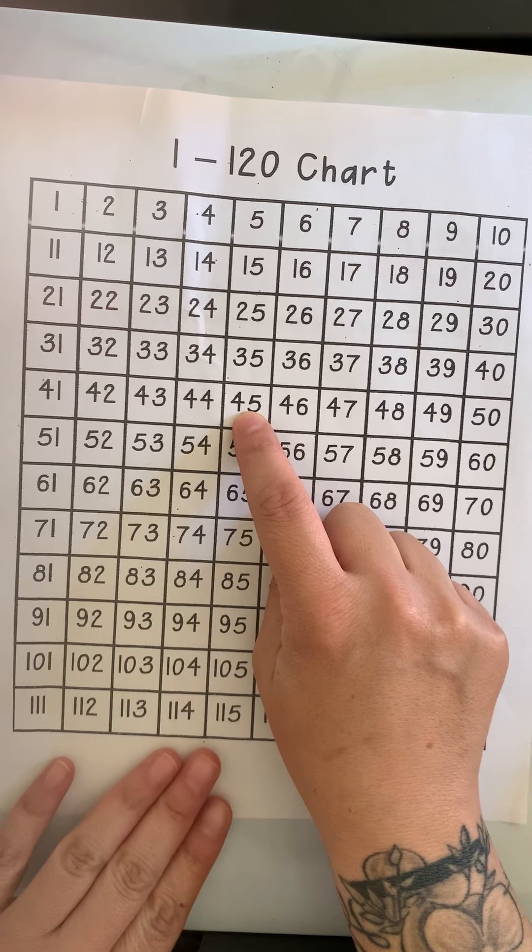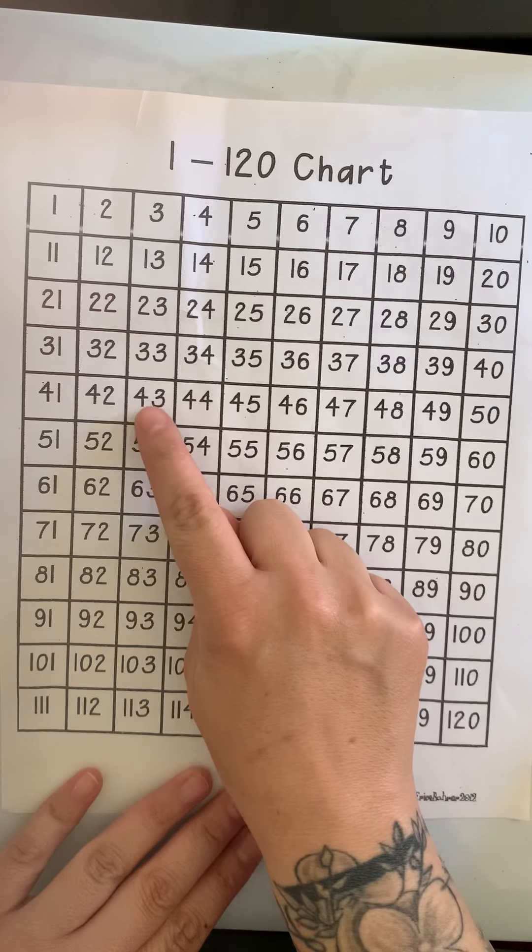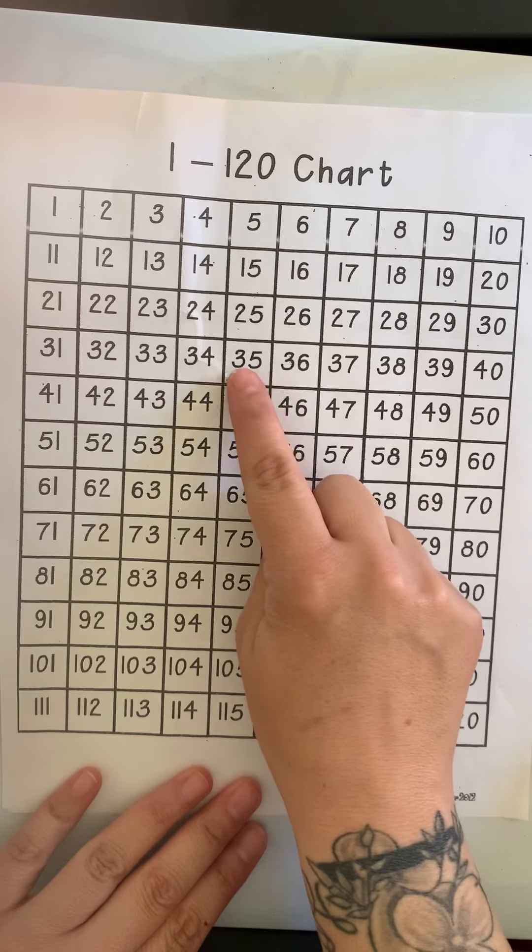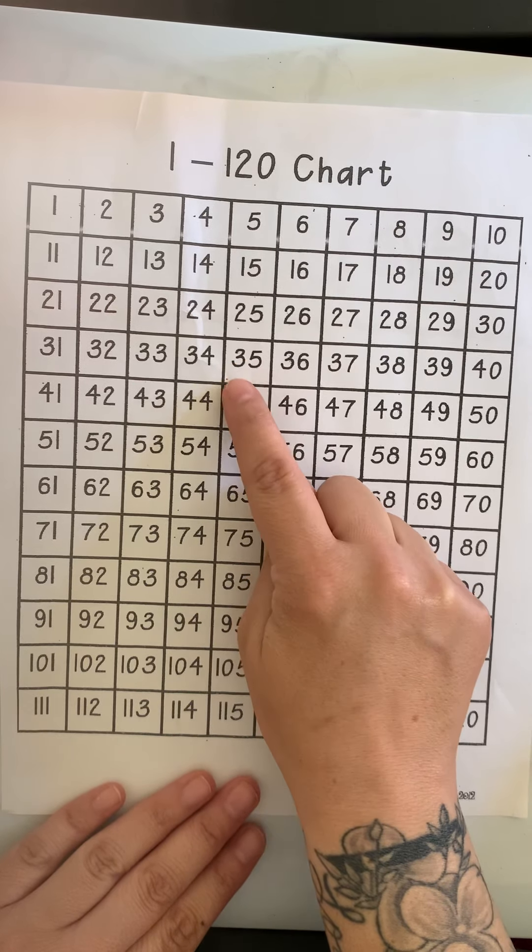I can count backwards by 10, because I know less means my number is getting smaller. 1, 2, 3, 4, 5, 6, 7, 8, 9, 10. Ten less than 45 is 35.